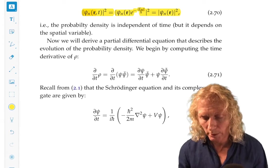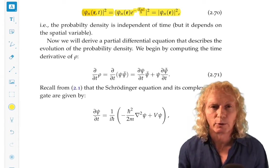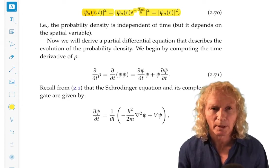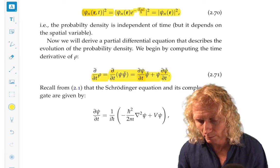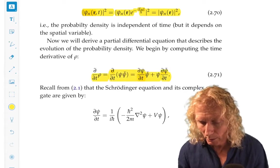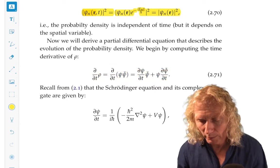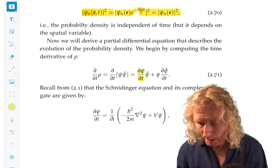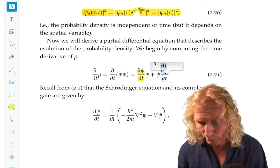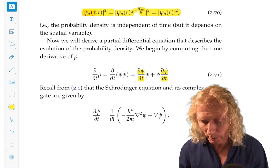Well, we're going to differentiate the probability density with respect to time. Probability density depends on space and time, so it's a partial derivative. So we use the product rule. And what we see here is we have these partial derivative of ψ with respect to t, and partial derivative of ψ bar with respect to t. Well, what we're going to do is use the Schrödinger equation.